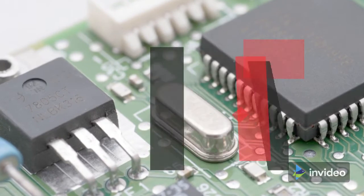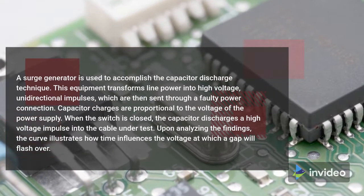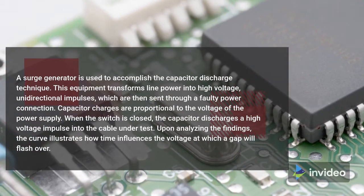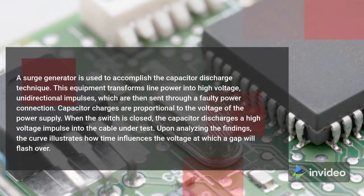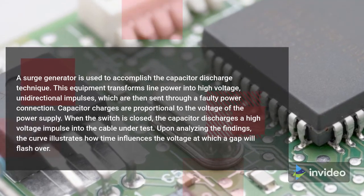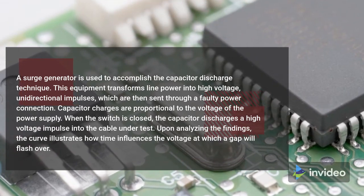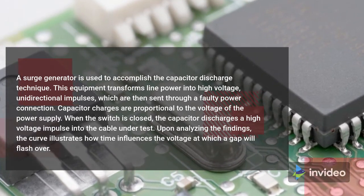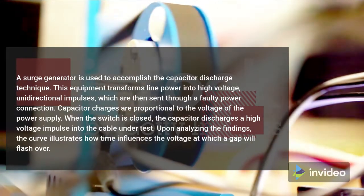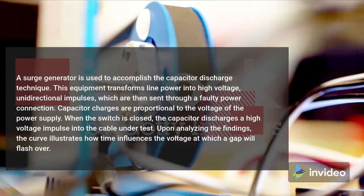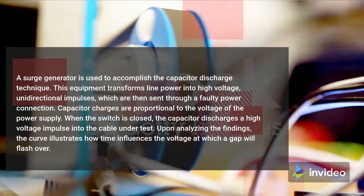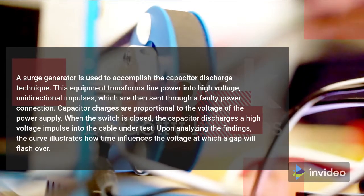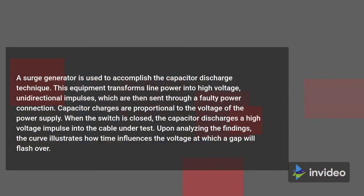A surge generator is used to accomplish the capacitor discharge technique. This equipment transforms line power into high voltage, unidirectional impulses, which are then sent through a faulty power connection. Capacitor charges are proportional to the voltage of the power supply. When the switch is closed, the capacitor discharges a high voltage impulse into the cable under test.